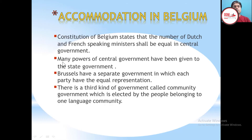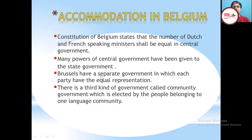Second, many powers of the central government have been given to the state governments. This is a kind of decentralization where powers of the central government are transferred to the states. The constitution of Belgium wanted to empower the states, and that is why some powers were given to state governments from the central government.